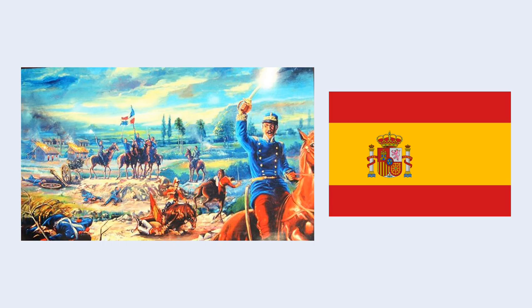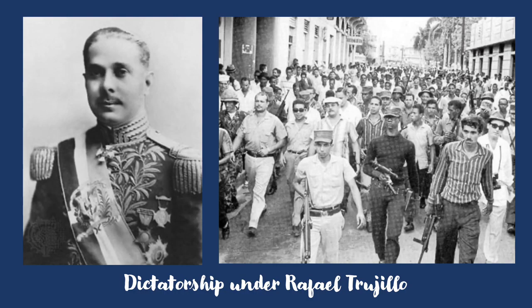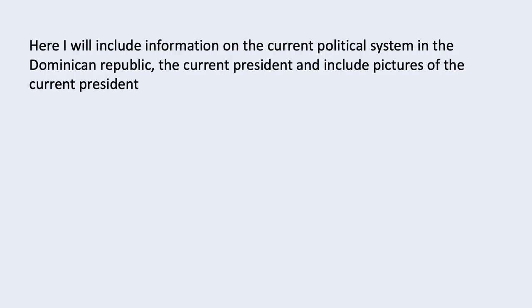This slide will briefly discuss the annexation by Spain on the island shortly after the Dominican Republic won its independence from Haiti. At this point I will discuss the dictatorship by Rafael Trujillo, which occurred in the 1930s to the 1960s. It was a period marked by immense violations of human rights and incredible violence by the government on the civilians and citizens of the Dominican Republic. I will also include information on the current political system, the current president, and pictures of the current president as well.